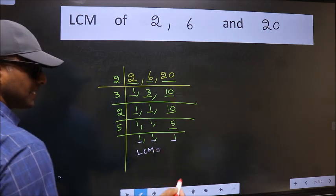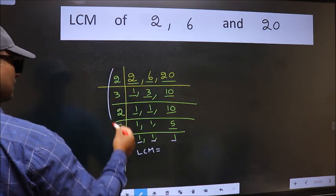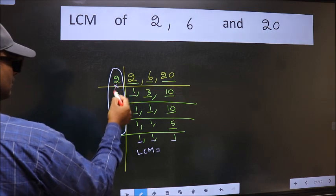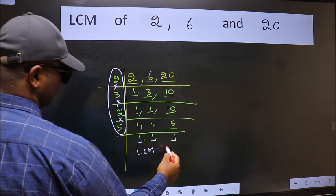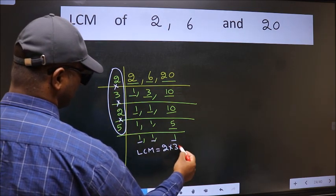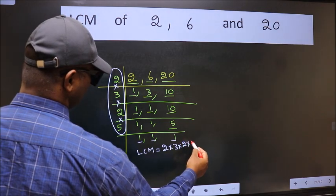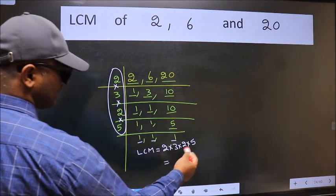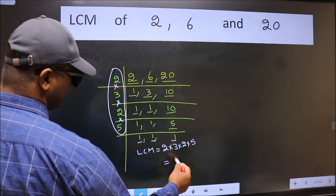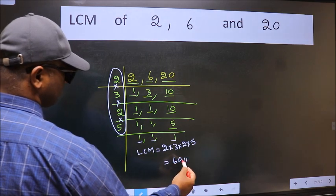LCM is the product of these numbers. That is 2 into 3 into 2 into 5. When we multiply these numbers, we get 60. This is our LCM.